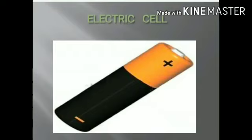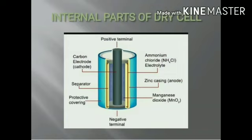An electric cell is a device which converts chemical energy into electrical energy. Here you can observe the picture of the inside view of a dry cell. Compared to other types of cells, the electrolyte in a dry cell is not liquid — hence the name dry cell. Some chemicals stored within the battery react with each other through a chemical process. When the chemicals in the electric cell are used up, the cell stops producing electricity and has to be replaced with a new one. Students, the same concept is continued in the next video.